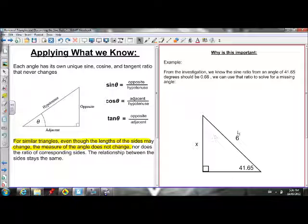So all of their ratios, opposite over hypotenuse, should be 0.66. So we could use that ratio to solve for a missing side. If we know the angle in here, 41.65, we know the ratio of opposite over hypotenuse, x over 6, should be 0.66.